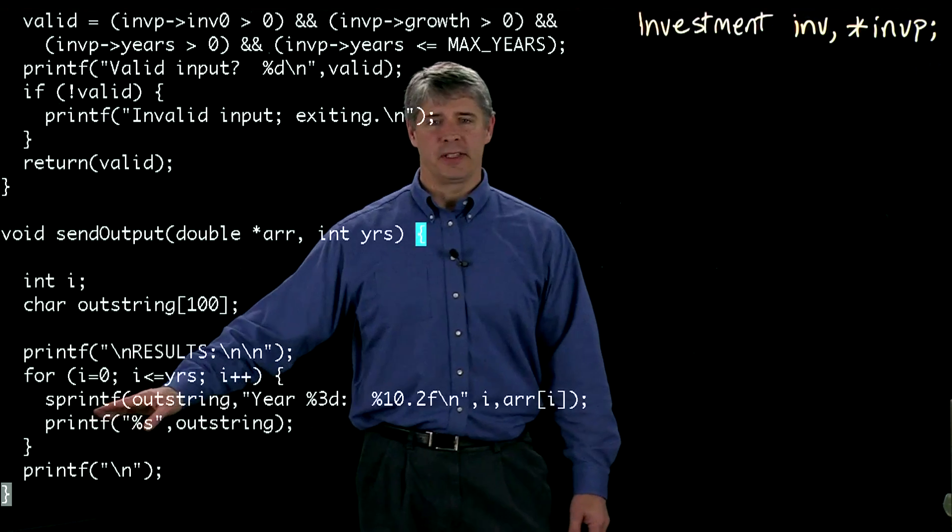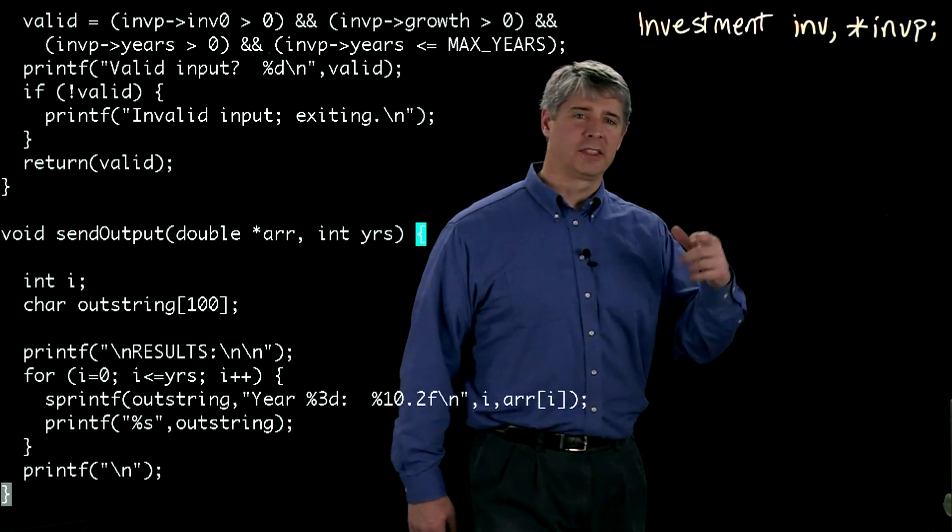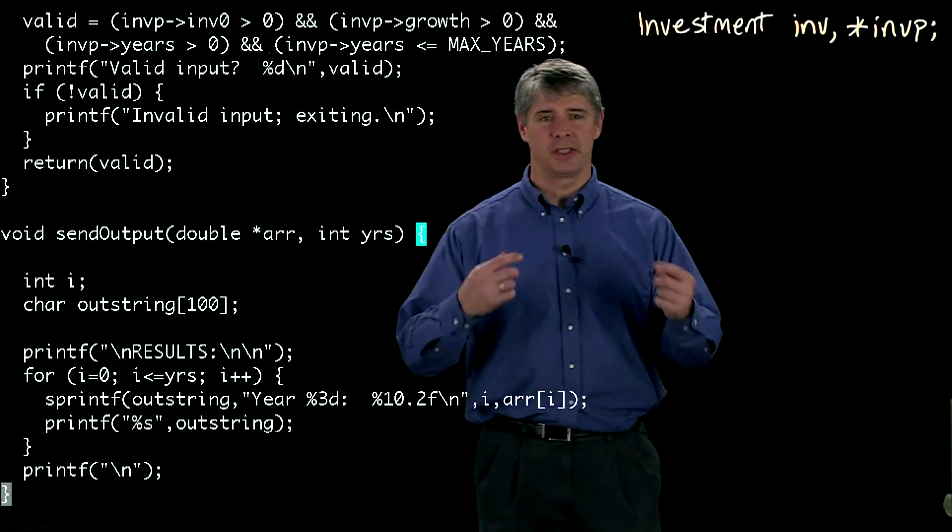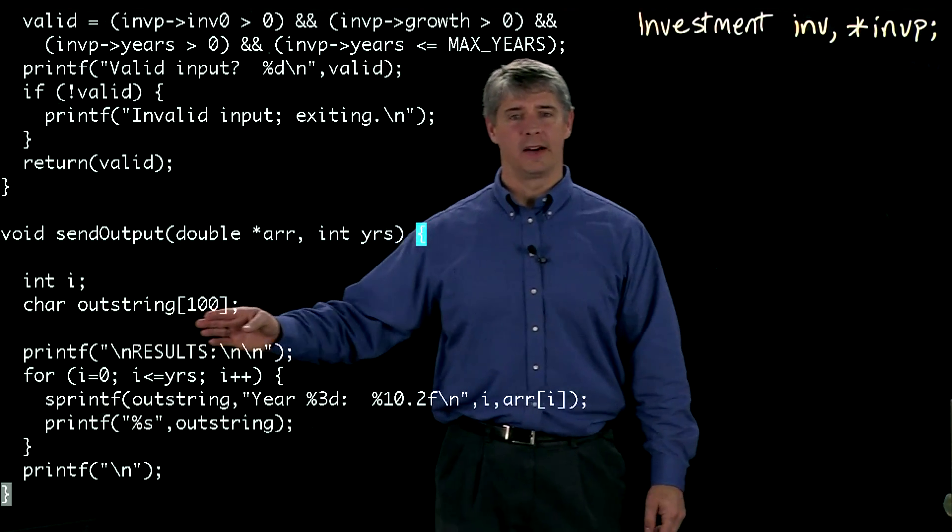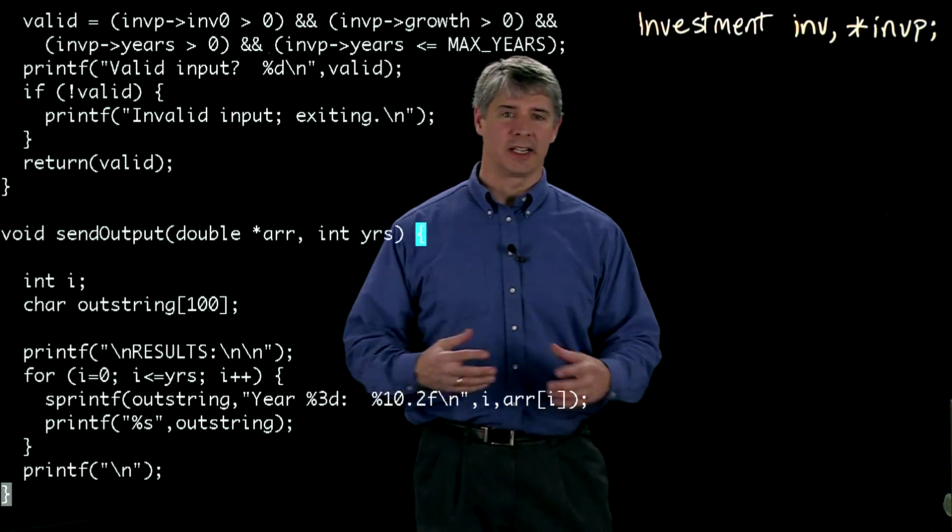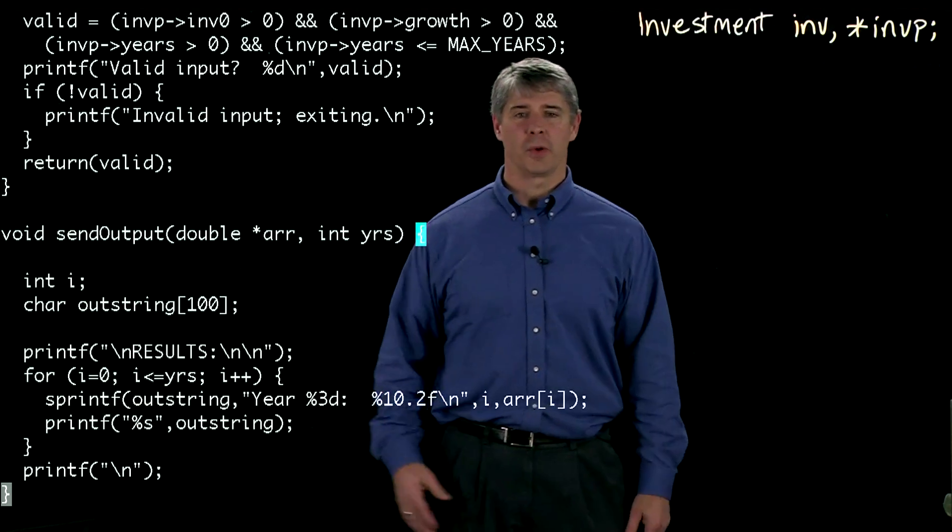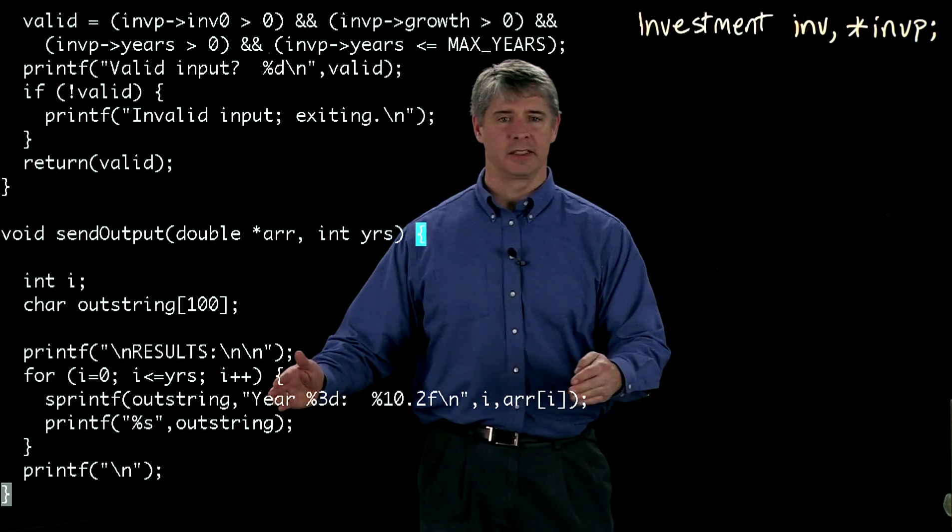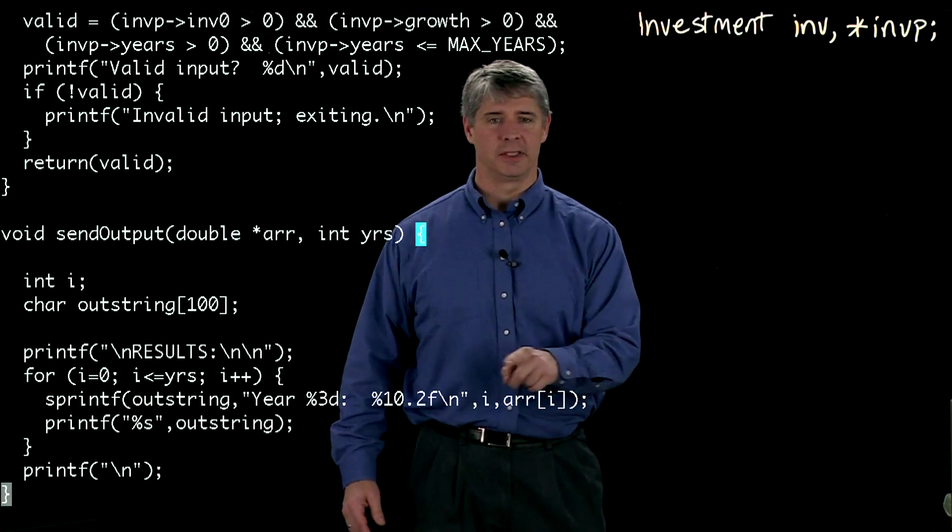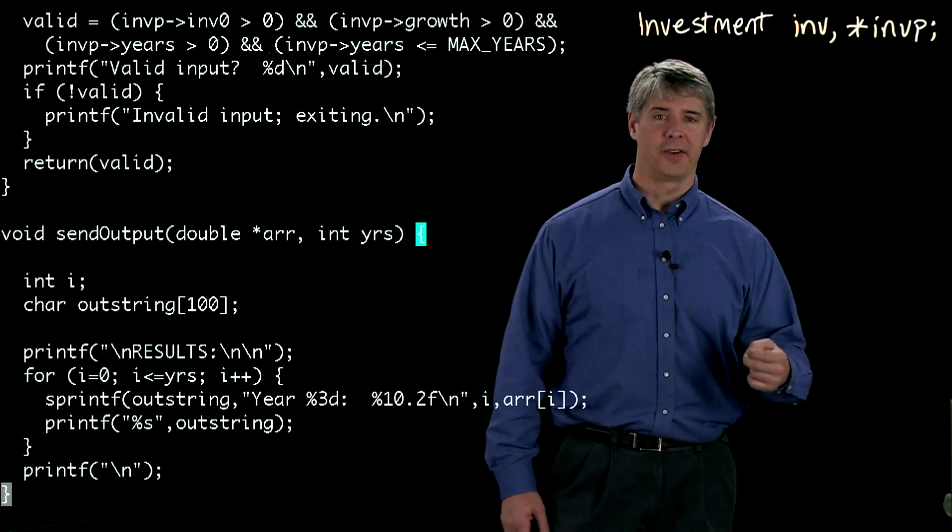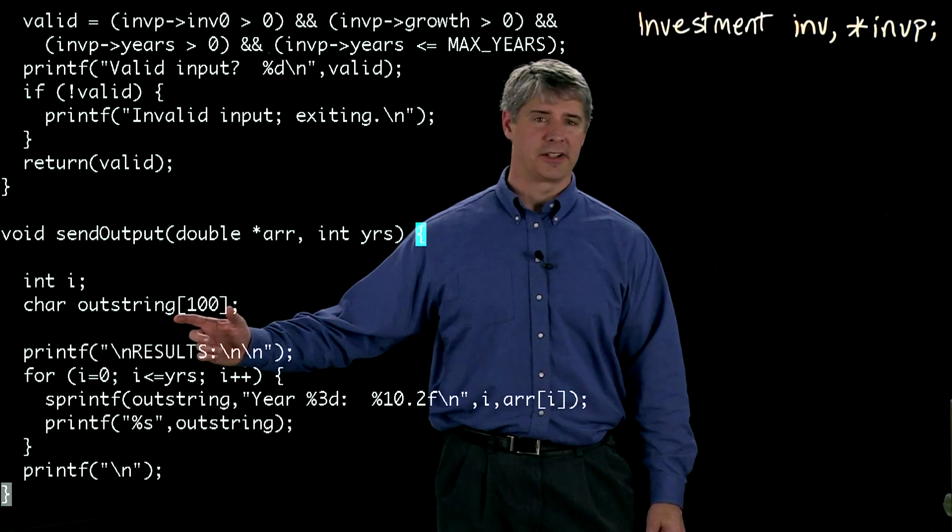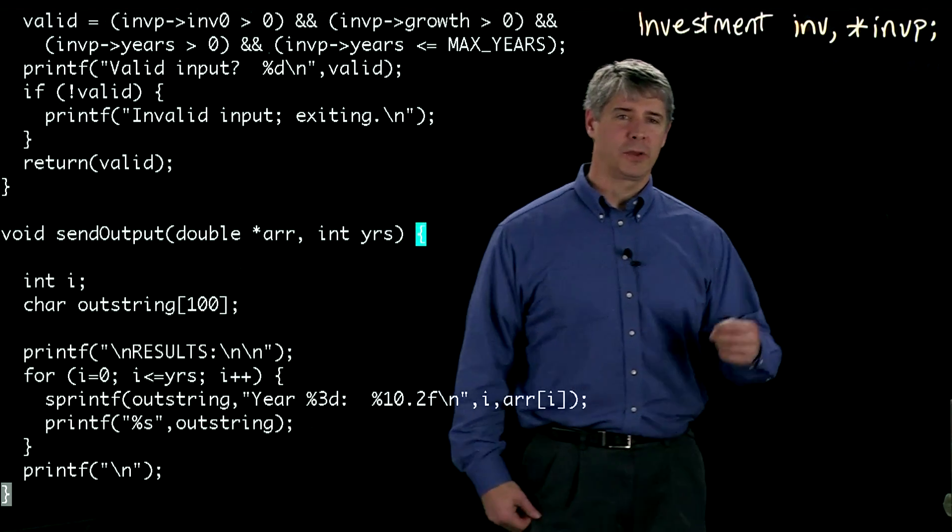This s printf, printf we know prints to the screen directly. s printf is printing to a string. So this array of characters here is a string, a character string. So we're going to print what comes here inside the quotes and these variables into a string called outstring, which better not be longer than a hundred because we've only allocated a hundred chars for it.